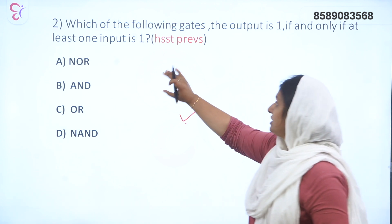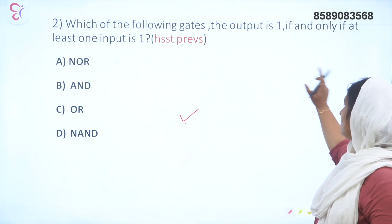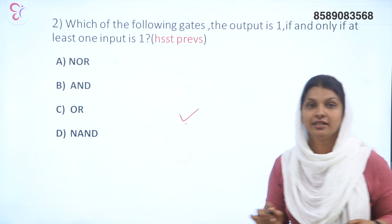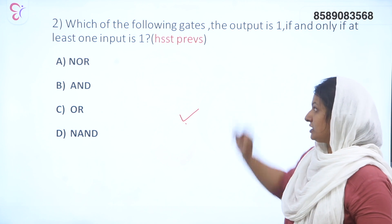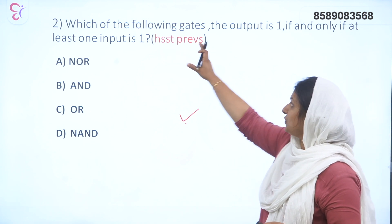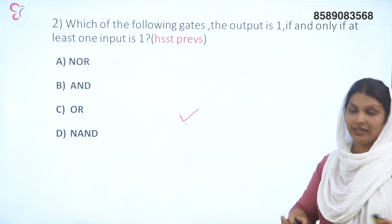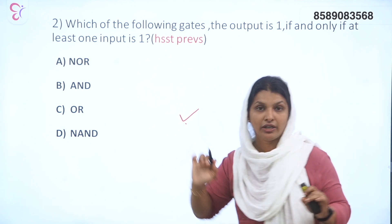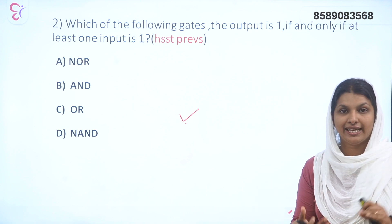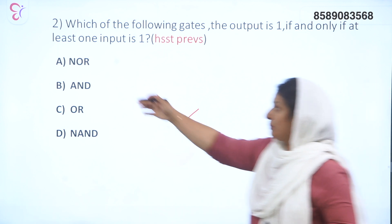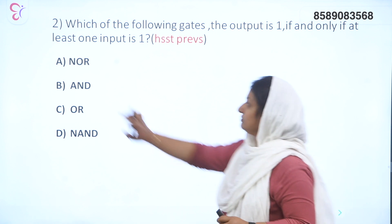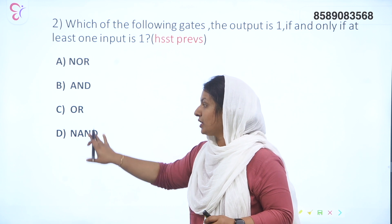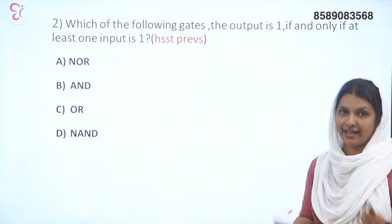Second question: which of the following gates has an output of 1 if and only if at least one input is 1? This is a previous HSST question. Options: A — NOR gate, B — AND gate, C — OR gate, D — NOT gate. What is the answer?